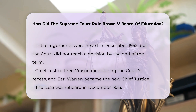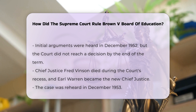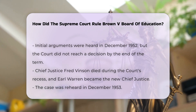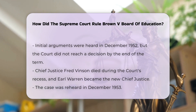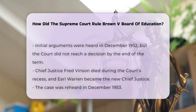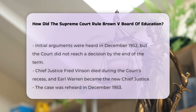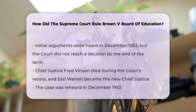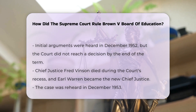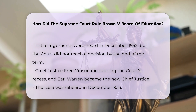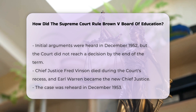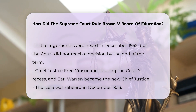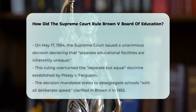Initially, the Supreme Court heard arguments in December 1952, but did not reach a decision by the end of the 1952-1953 term. During the court's recess, Chief Justice Fred Vinson died, and Earl Warren was appointed as the new chief justice. The case was re-heard in December 1953. On May 17, 1954, the Supreme Court issued a unanimous decision.